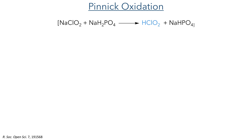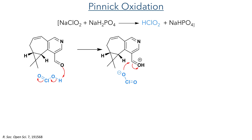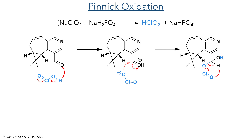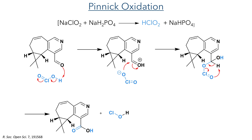To selectively oxidise this aldehyde to the carboxylic acid, a Pinnick oxidation was employed. In this reaction, chlorous acid is first generated by the reaction of sodium chlorite and sodium dihydrogen phosphate. This first protonates the aldehyde and allows the chloride to act as a nucleophile to attack the carbonyl centre. A pericyclic fragmentation then occurs, a proton is abstracted from the substrate, and hypochlorous acid is generated as a by-product. Amylene is added to the reaction to act as a scavenger for this hypochlorous acid, which reacts in a halohydrin reaction to neutralise it.